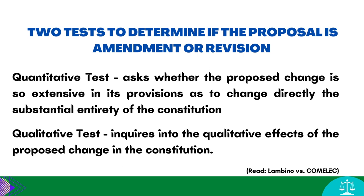In Lambino v. Comelec, under both the quantitative and qualitative tests, the Lambino Group's initiative is a revision and not merely an amendment. Quantitatively, the Lambino Group's proposed changes overhaul two articles — Article 6 on the legislature and Article 7 on the executive — affecting a total of 105 provisions in the entire Constitution. Qualitatively, the proposed changes alter substantially the basic governmental plan from presidential to parliamentary and from bicameral to a unicameral legislature.